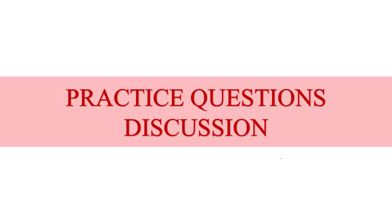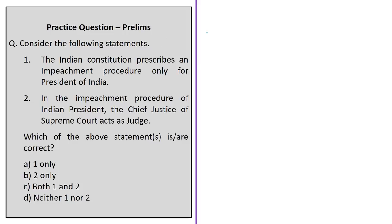Now let's move on to the special session on practice questions. The first question is about the impeachment procedure, with two statements asking which are correct. Statement 1 states: 'The Indian Constitution prescribes an impeachment procedure only for the President of India.' This is correct — the procedure is mentioned in Article 61 of the Indian Constitution. So we can eliminate options B and D.